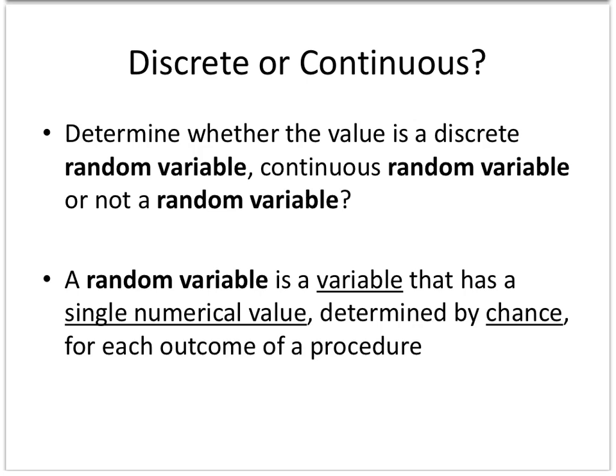So if we want to determine if a value is a discrete random variable, continuous random variable, or not a random variable, we need to know what a random variable actually is. A random variable is a variable that has a single numerical value determined by chance for each outcome of a procedure.